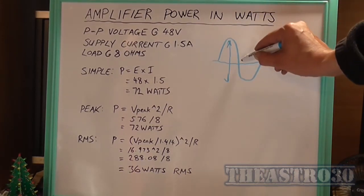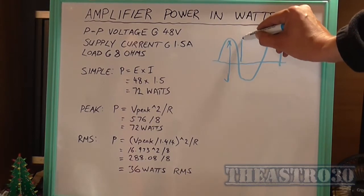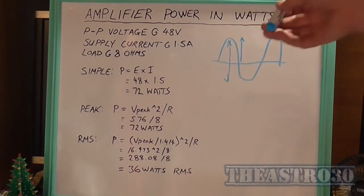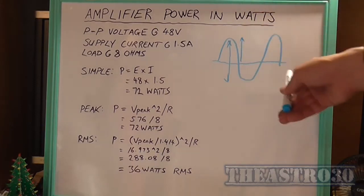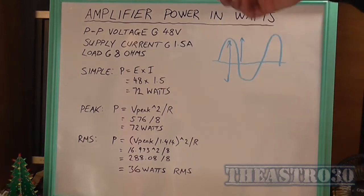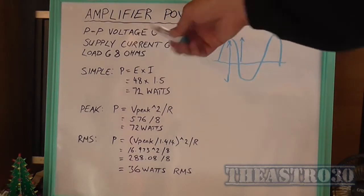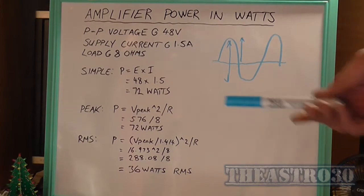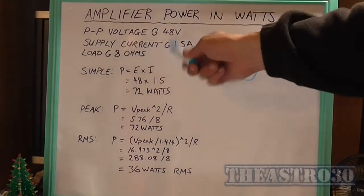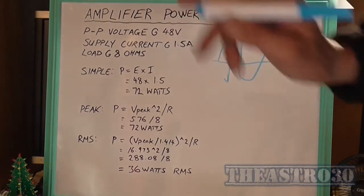V peak on the other hand is from the zero line to the peak, or it could be to the negative peak. But it doesn't really matter, if it's a sinusoidal waveform and they're equal on both sides of the zero line, you can use either. So in other words, it's half the peak to peak voltage. So that gives us a voltage of 24 volts.